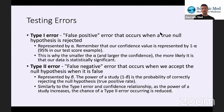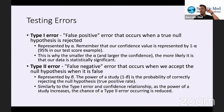Type two errors are false negatives. Those occur when we accept the null hypothesis when it's false — when we predict there is no statistical significance when there actually is — and that's represented by the Greek letter beta. Alpha relates to confidence as one minus alpha; similarly, one minus beta is the power of the study, which is the probability of correctly rejecting the null hypothesis. As the power of a study increases, the chance of a type two error occurring is reduced.